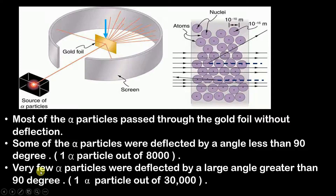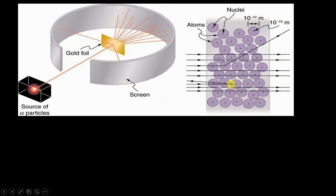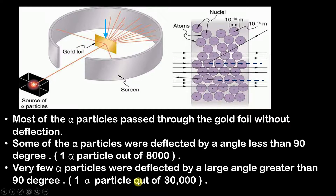The third observation was that very few alpha particles were deflected by a large angle greater than 90 degrees. Can you see this alpha particle? Instead of traveling in a straight line, it is deflected away, and this angle is obviously greater than 90 degrees. The ratio was one particle out of 30,000 deflected in this manner — very few compared to the previous case.